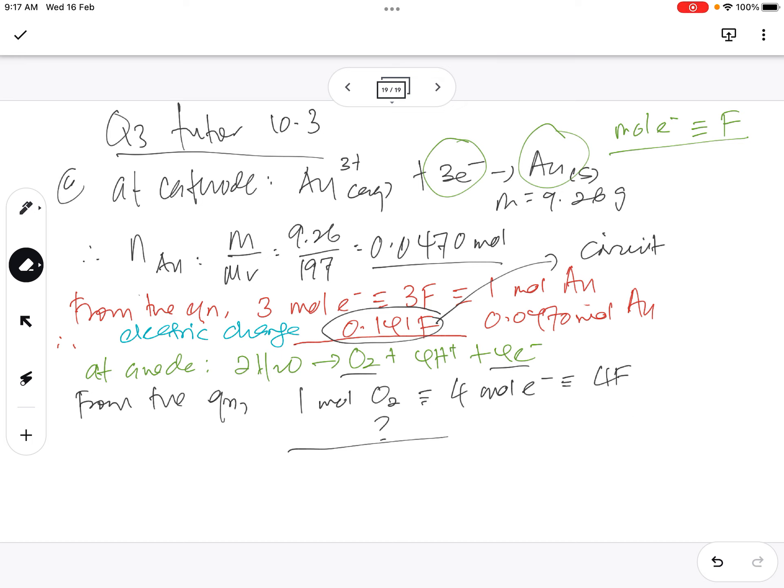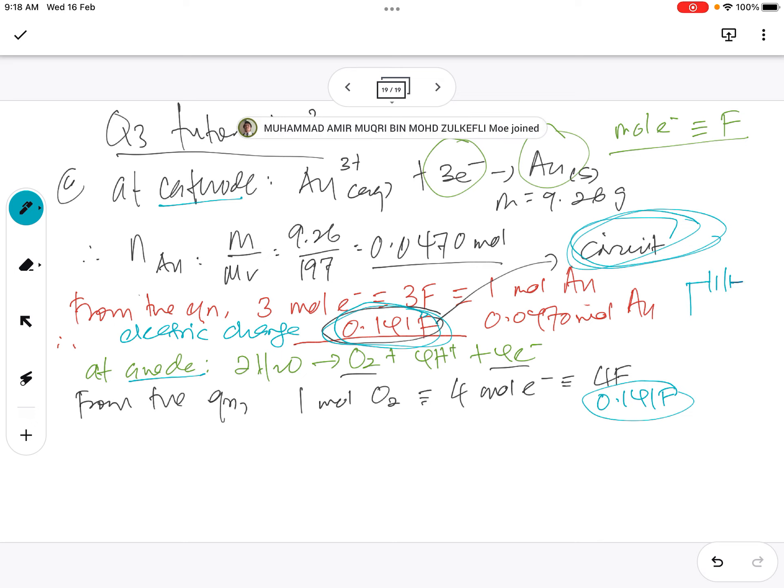I repeat again. I think I use different color. In this experiment, or in this circuit, 0.141 Faraday is the amount of electric charge travel in the circuit. So if I'm using 0.141 Faraday as well at the anode, because it must be the same - at cathode if 0.141 Faraday, the anode must also be 0.141 Faraday because we are talking about circuit. If here 0.141 Faraday, entering here also 0.141 Faraday. Can you understand that?